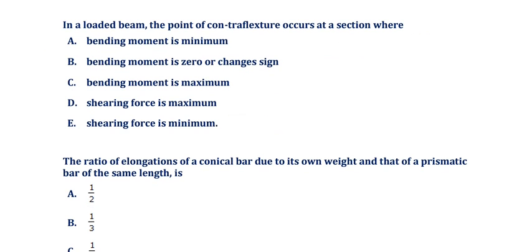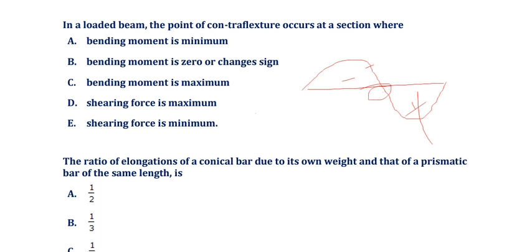In a loaded beam, the point of contraflexure occurs at a section where the bending moment sign changes — either positive to negative or negative to positive — or where the bending moment becomes zero. The options given include: bending moment is maximum, bending moment is zero or changes sign, shear force is maximum, or shear force is minimum. The correct answer is: bending moment is zero or changes its sign.